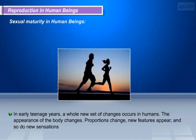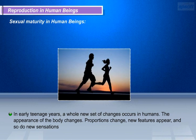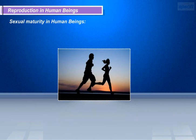Now let us move on to reproduction in human beings. Before we study about reproduction in humans, let us discuss a few changes in humans which appear to happen after gaining a certain age. In early teenage years, a whole new set of changes occurs in humans. The appearance of the body changes — proportions change, new features appear, and so do new sensations.